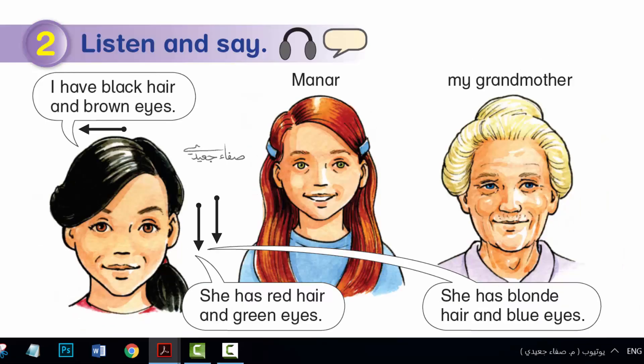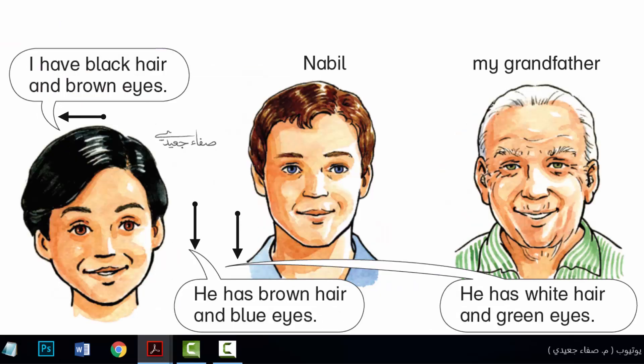This is me, Tala. I have black hair and brown eyes. This is me, Sammy. I have black hair and brown eyes.